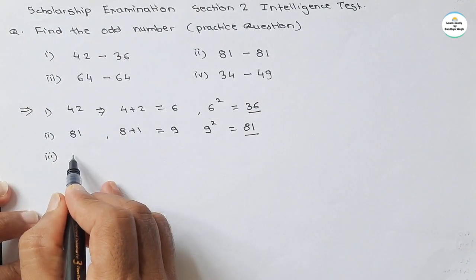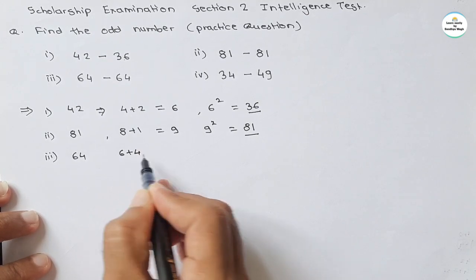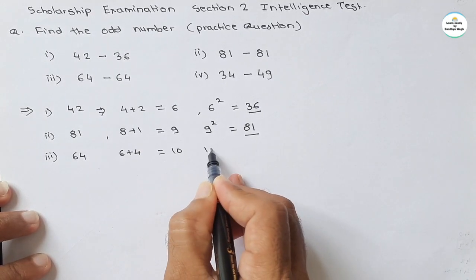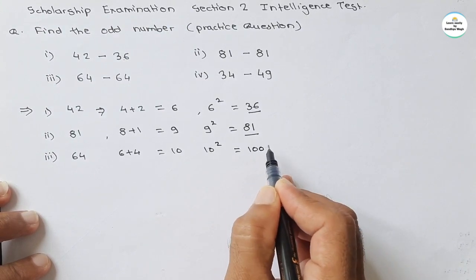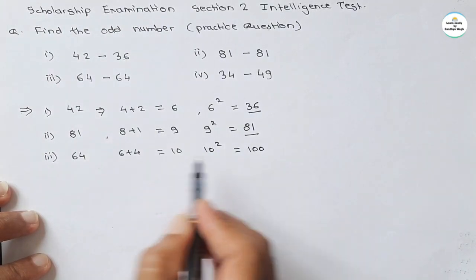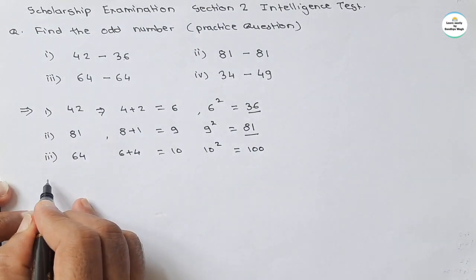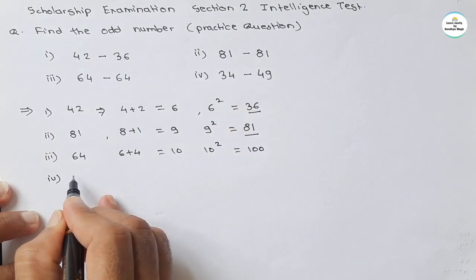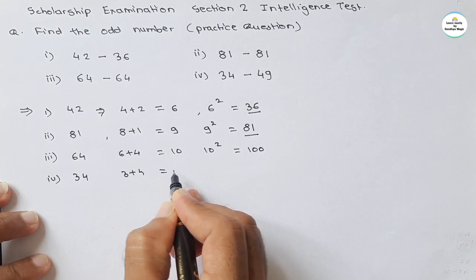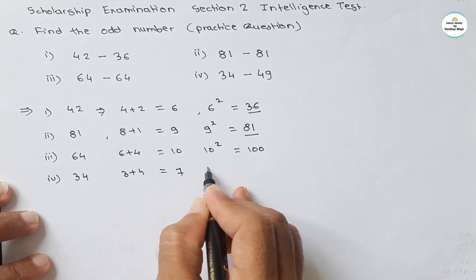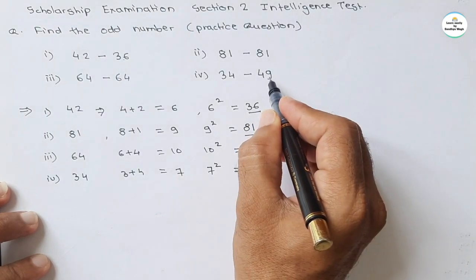Now see the third one: 64 — sum of digits is 3 plus 4, wait — actually the digits give 10, and the square of 10 is 100, but the pair shows 64. So this rule is not applicable for the third number. Now the last number: 34 — sum of digits 3 plus 4 equals 7, and 7 squared is 49. Here we are getting 49. So the rule applies to the first, second, and fourth pairs, meaning the third number (64-64) is the odd one.